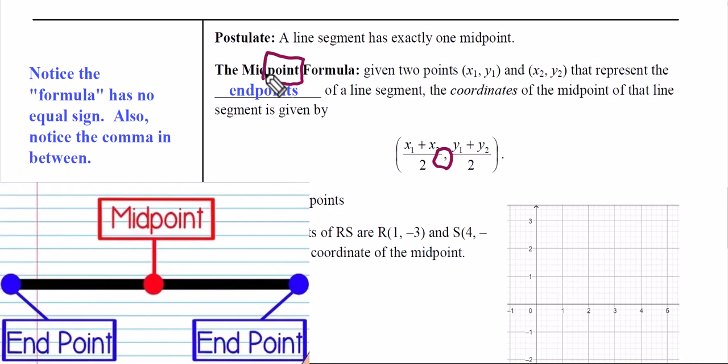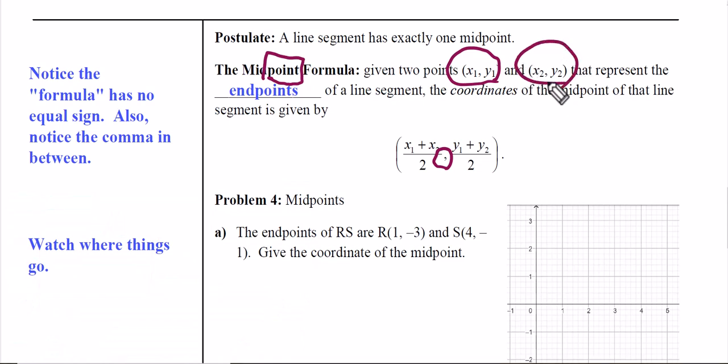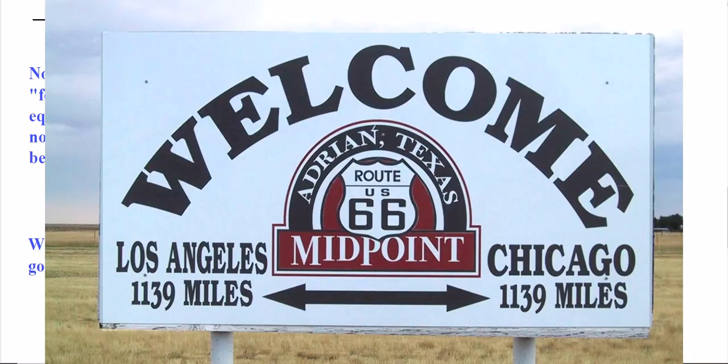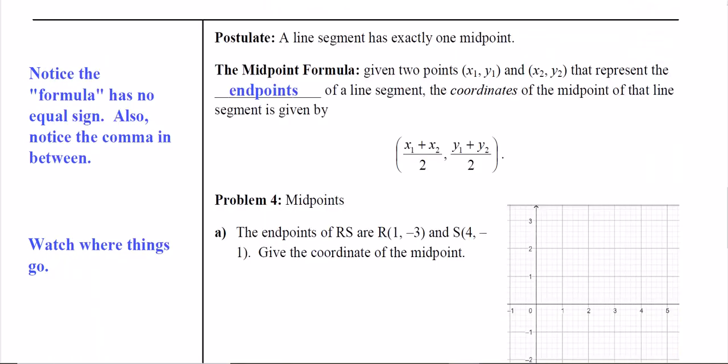In order to find the midpoint, we need two given points that represent the endpoints of a line segment. There's an important placement where things go, similar to the distance formula. Notice that our formula doesn't have an equal sign like the distance formula.